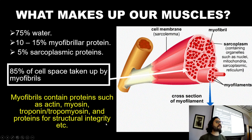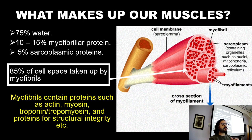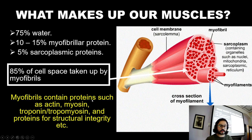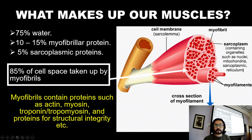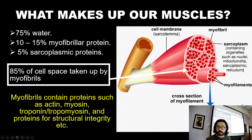The myofibrils contain actin and myosin. We also have troponin and tropomyosin, which are important for cross-bridge formation and the power stroke for muscle contraction. We've got proteins for structural integrity — for example, titin. And these are all arranged quite closely packed together in these bundles, and we've got literally millions of these bundles and fibres within our muscle.